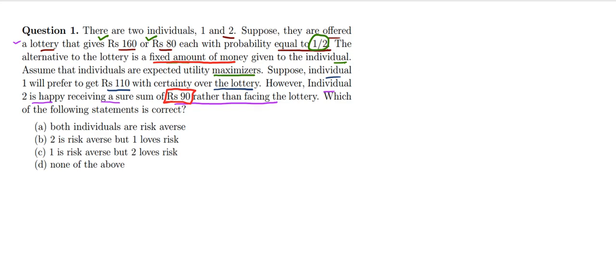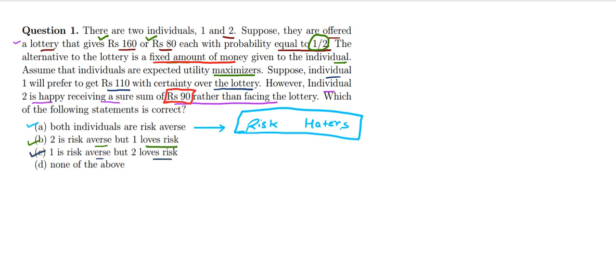Which of the following statements is correct? We have four options: (A) both individuals are risk averse, (B) two is risk averse but one loves risk, (C) one is risk averse and two loves risk, and (D) none of the above. Risk averse means they are risk haters — they prefer a lesser but certain amount over taking any risk.